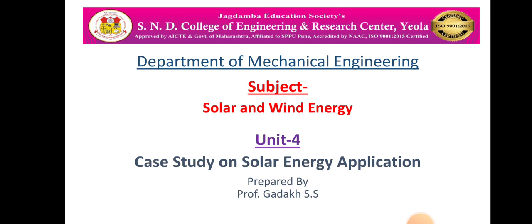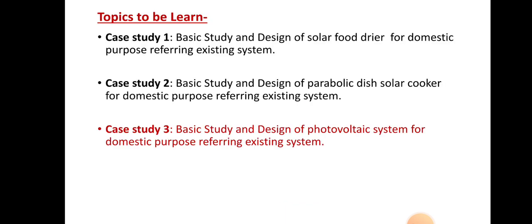From that subject, we have started unit number 4, which is the case study on solar energy application. We have seen some topics up to the last lecture. In this particular unit, we have to learn three case studies: first is related to the solar food dryer, second is the parabolic dish collector versus parabolic dish solar cooker, and third is related to the photovoltaic system. Up to the last lecture, we have covered the first two case studies, and in the last lecture we started case study number 3 and covered some topics from it.